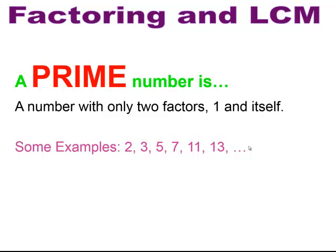2 is only divisible by 1 and itself. 3 is only divisible by 1 and itself. Notice that 4 is not included. 4 is divisible by 1 and itself, but it's also divisible by 2. So the only even prime number you'll have is 2. Every other even number after that will not be prime because 2 can divide into it.